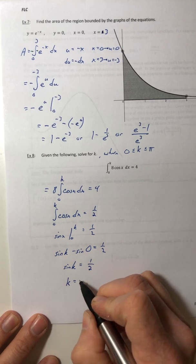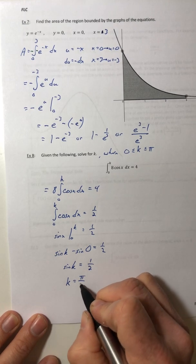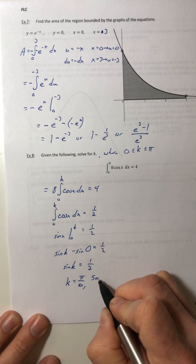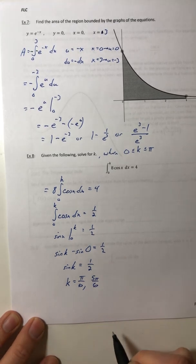So where does sine equal one half? Well, it equals it in two places. Pi over 6 and 5 pi over 6. So we have two solutions for k.